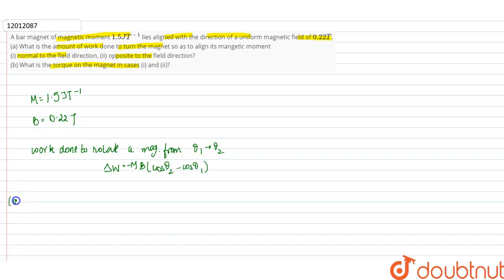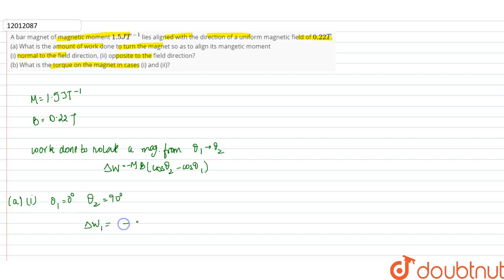Considering the first part, θ₁ = 0° and θ₂ = 90°. Substituting, ΔW₁ = −1.5 × 0.22 × (cos90° − cos0°) = −1.5 × 0.22 × (0 − 1), which equals 0.3 joules.